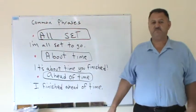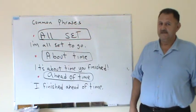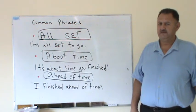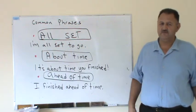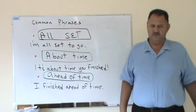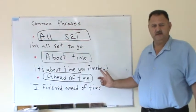About time es una expresión que nosotros decimos ya era hora. It's about time. Ya era hora.